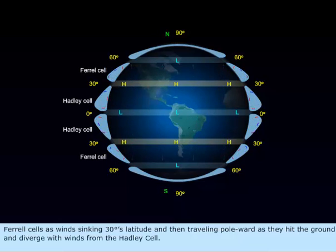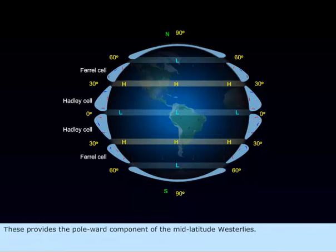Ferrel cell has winds sinking at 30 degrees latitude and then travelling poleward as they hit the ground and diverge with winds from the Hadley cell. This provides the poleward component of the mid-latitude westerlies.